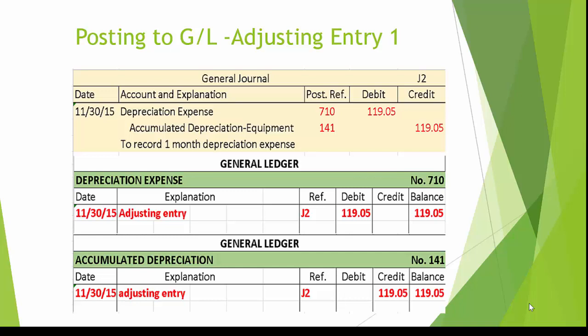Similarly, in the general journal posting reference column, after each debit and credit have been entered or posted to the general ledger, the general ledger account number is entered in the posting reference column of the general journal.